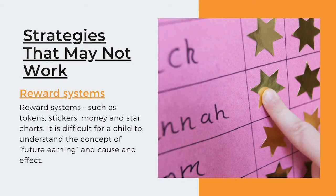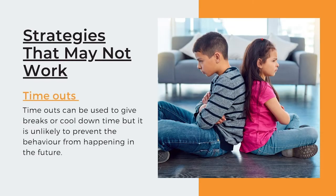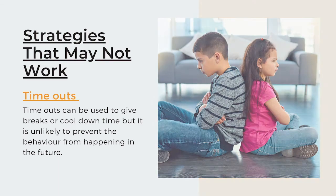Strategies that may not work: Reward systems such as tokens, stickers, money, and star charts. It's difficult for a child to understand the concept of future earning and cause and effect. Timeouts can be used to give breaks or cool-down time, but it is unlikely to prevent the behavior from happening in the future.